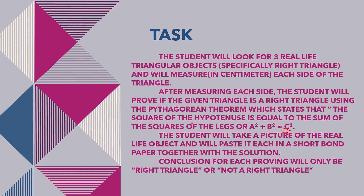If the values satisfy or are equal, then it is a right triangle. If not, then it is not a right triangle. Because there are some objects that look like a right triangle, but if they don't satisfy the Pythagorean theorem, then they are not a right triangle — maybe some measurements are slightly off, or it's just not truly right.